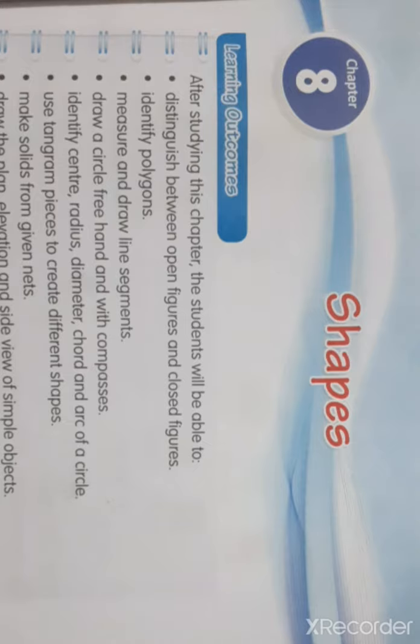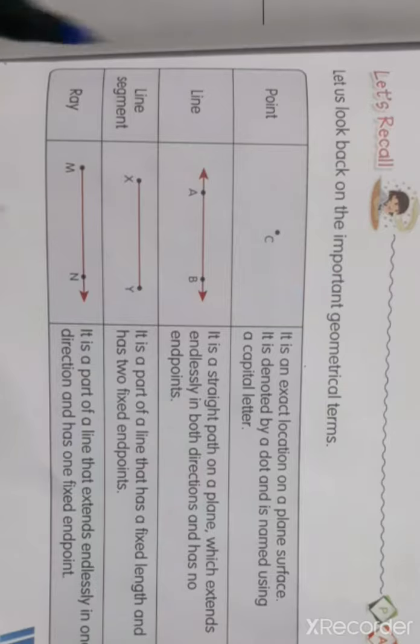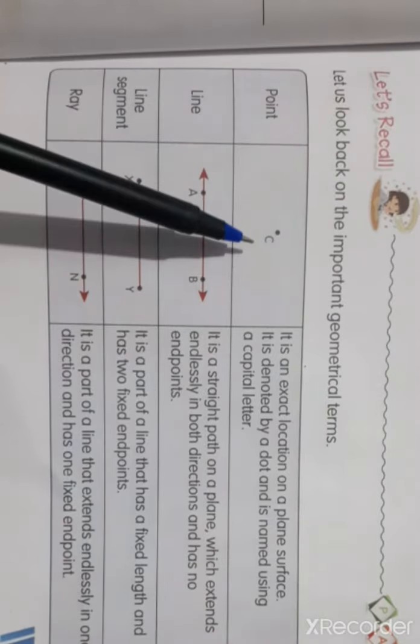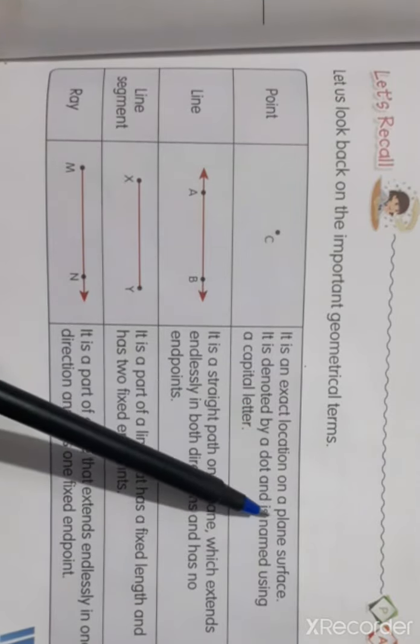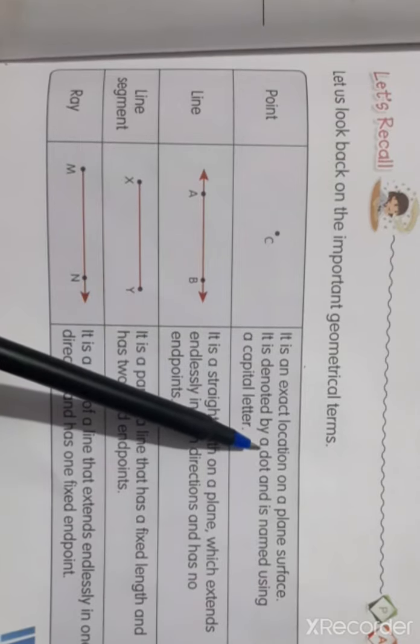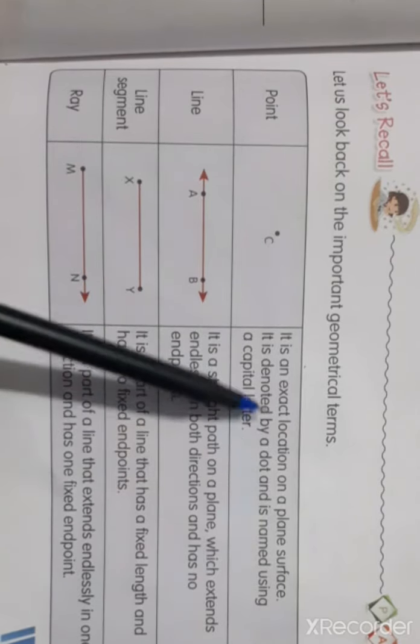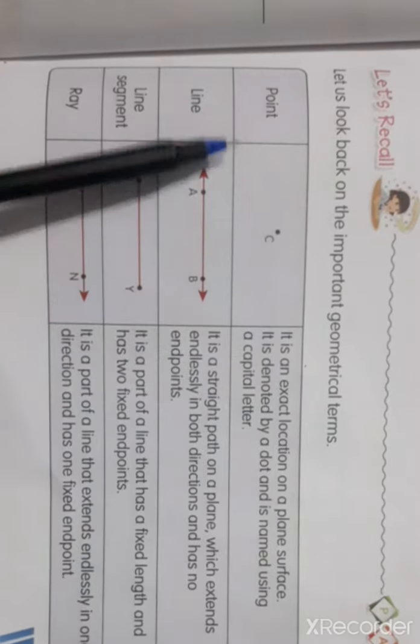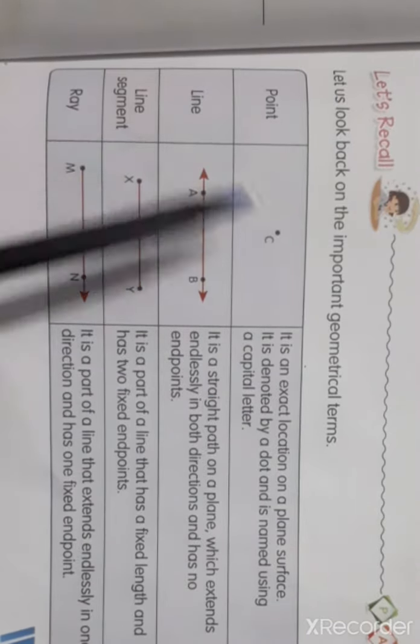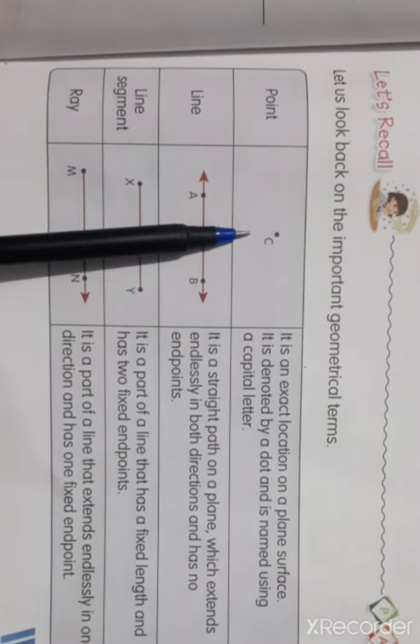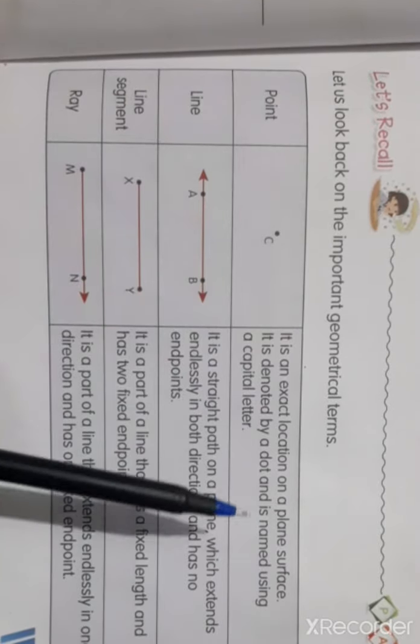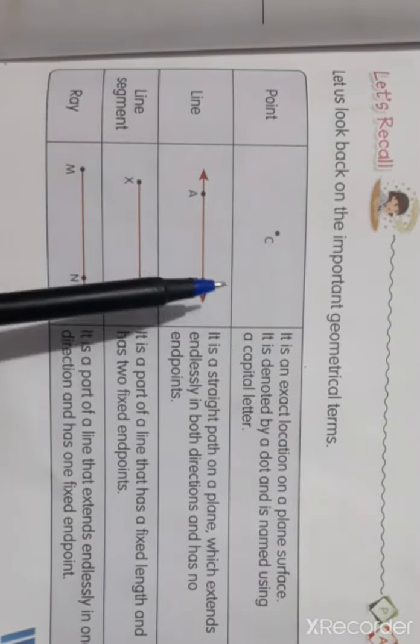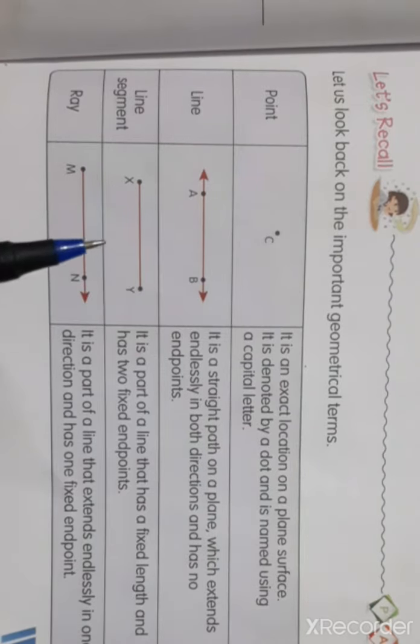Let us look back on the important geometrical terms. Yes, first point. Point, it is an exact location on a plane surface. On a plane surface, it is denoted by a dot. And it is named using a capital letter. We are given the capital letter.